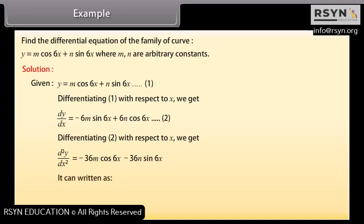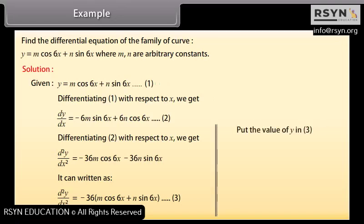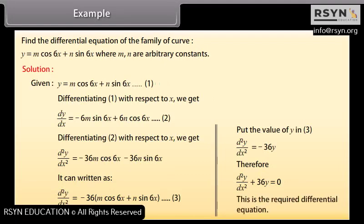This can be written as d²y/dx² = −36(m·cos(6x) + n·sin(6x)) = −36y. Therefore d²y/dx² + 36y = 0. This is the required differential equation.